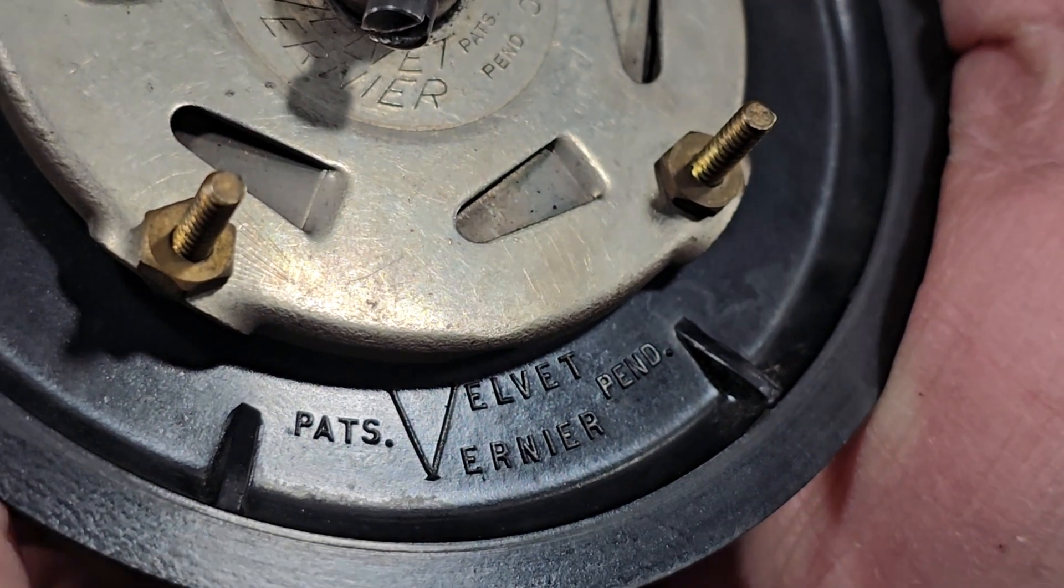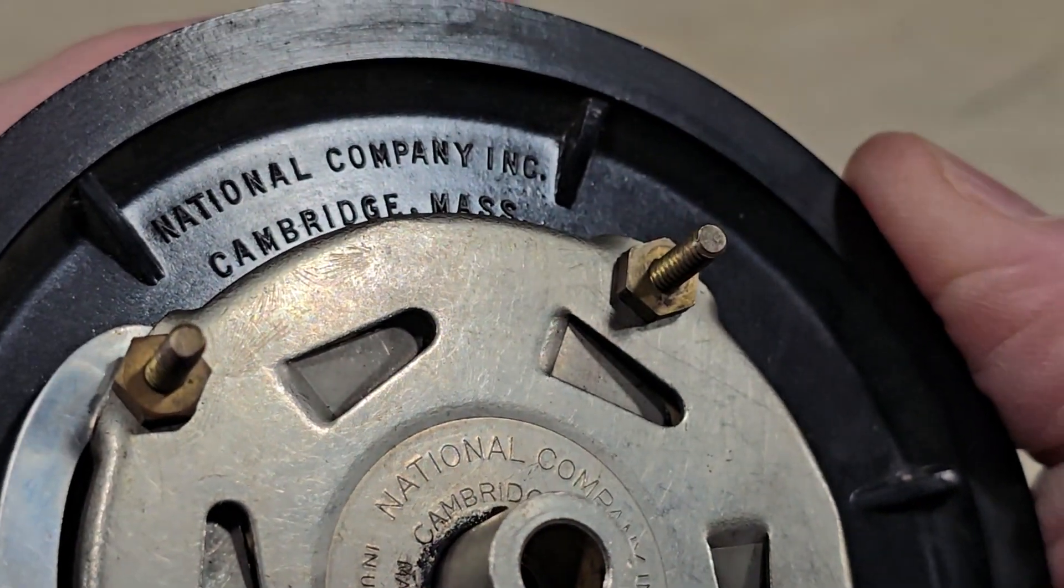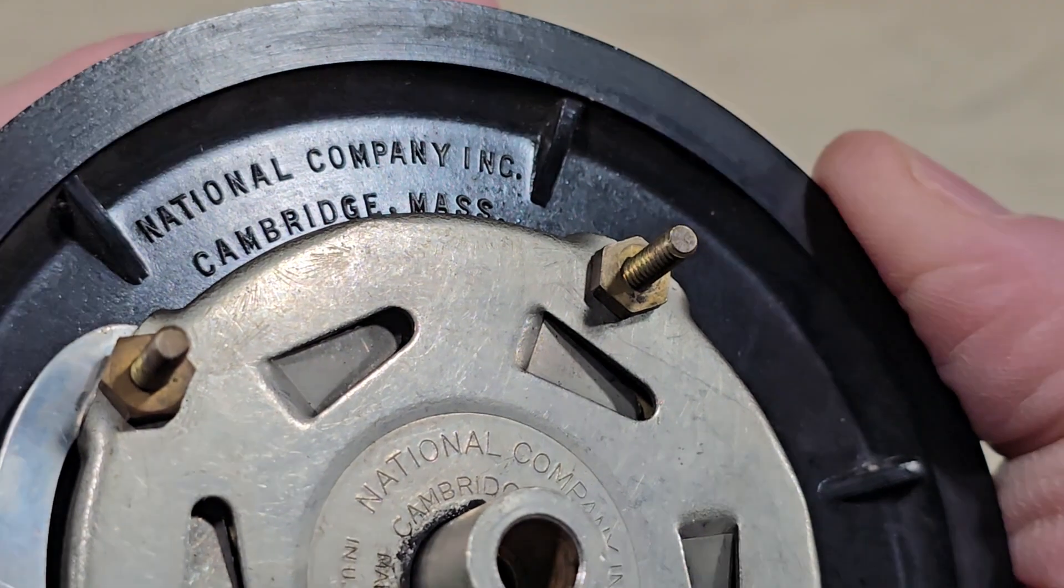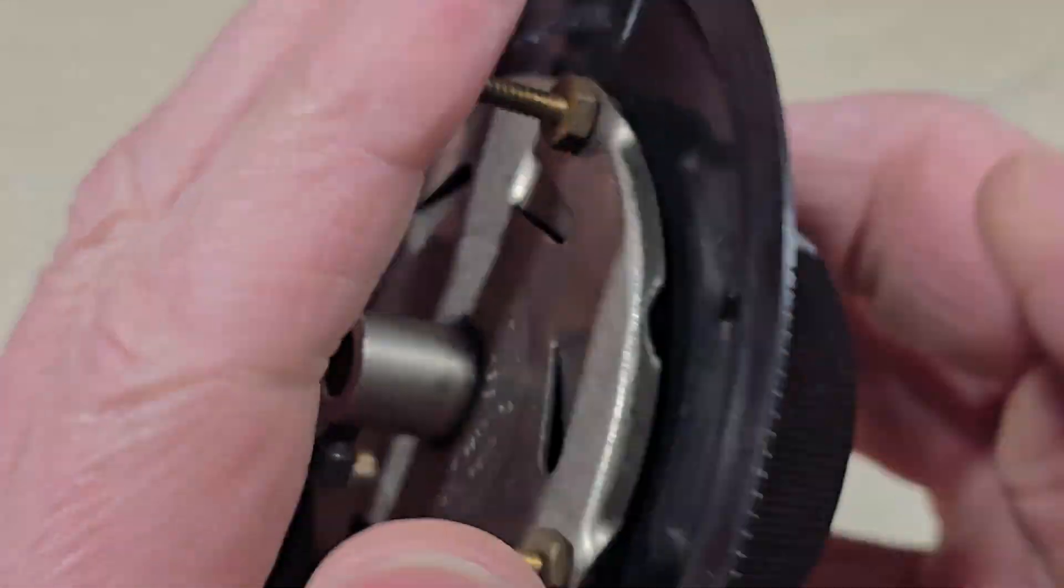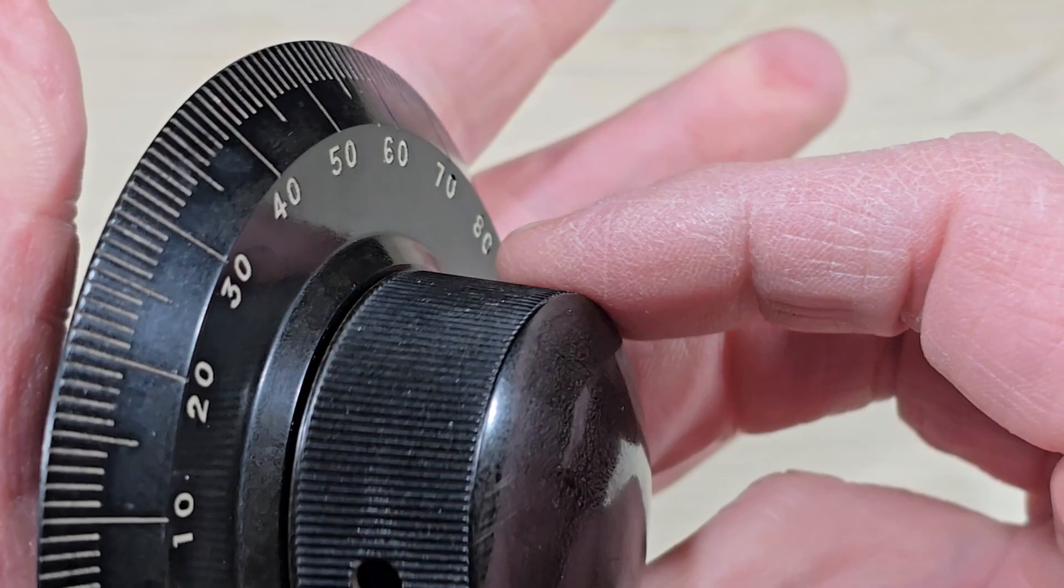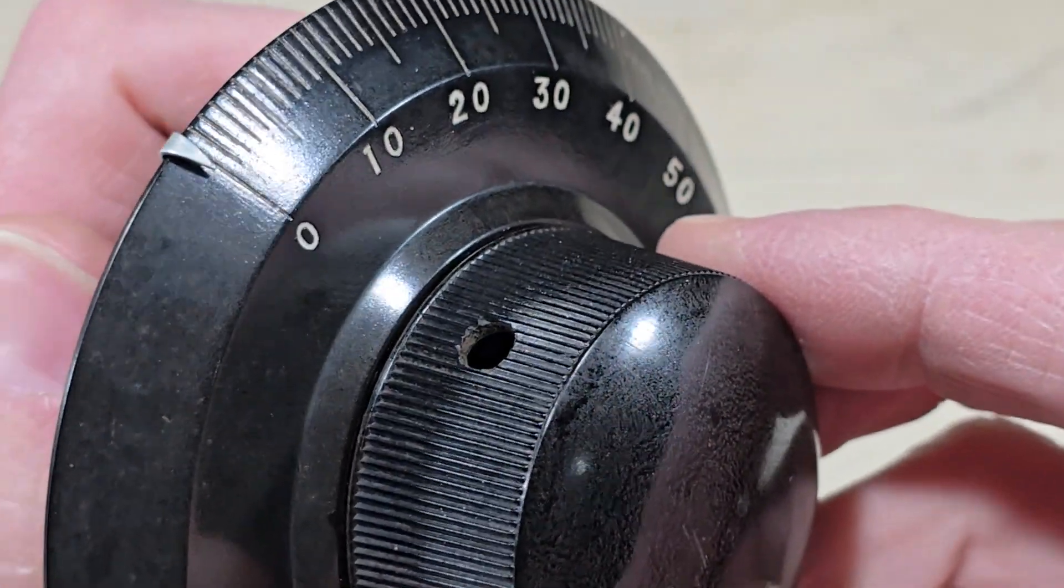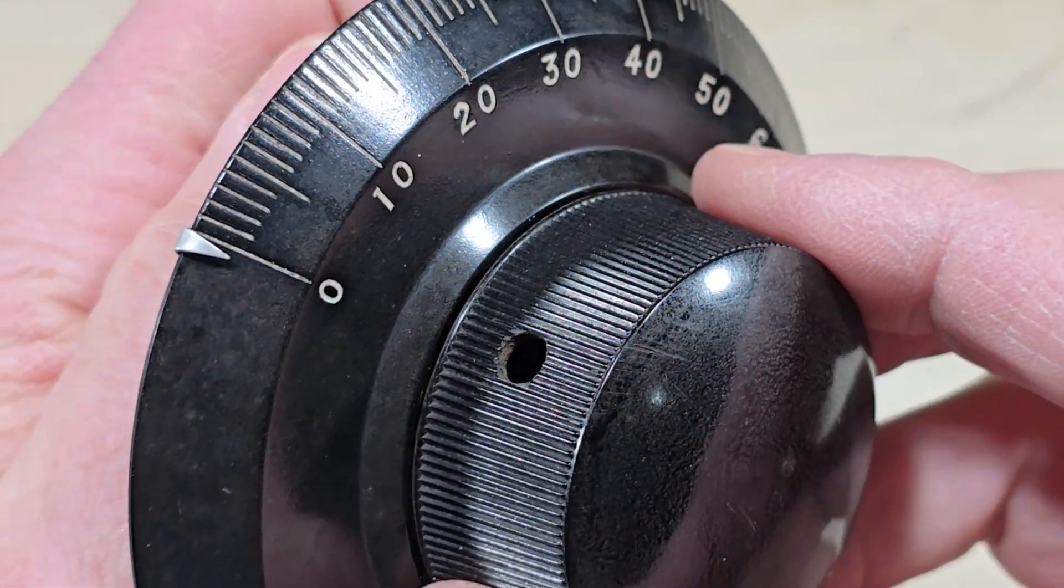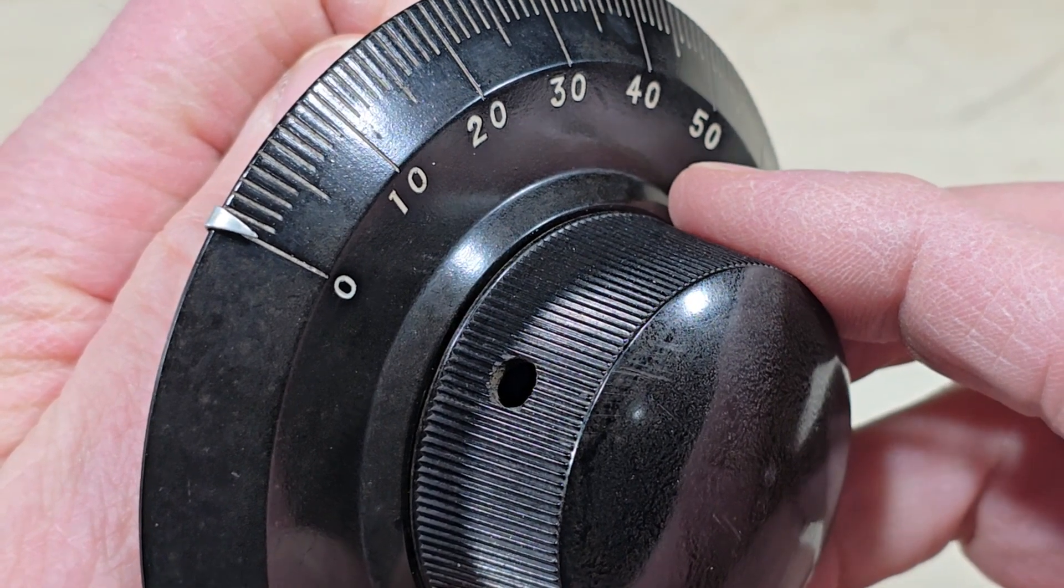The Velvet Vernier by the National Company out of Cambridge, Massachusetts is a 100-year-old radio accessory. It's a tuning dial with a built-in reduction gear.